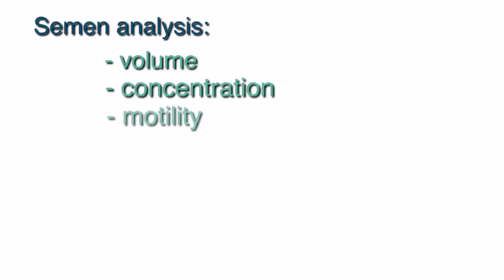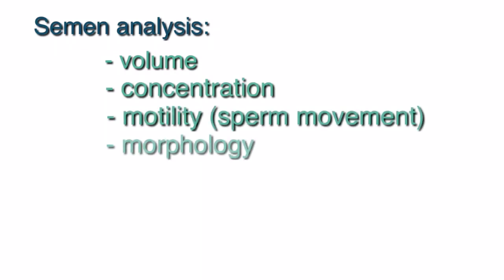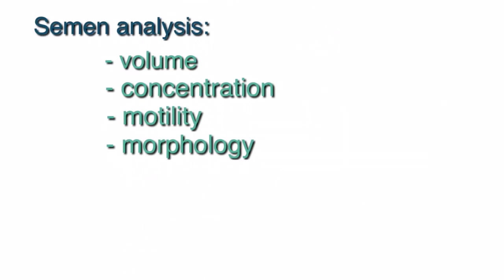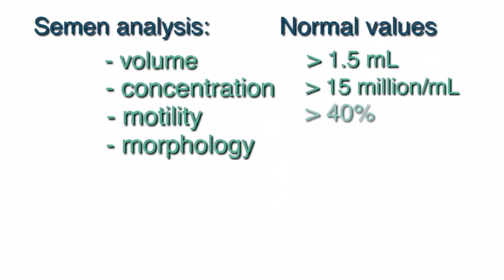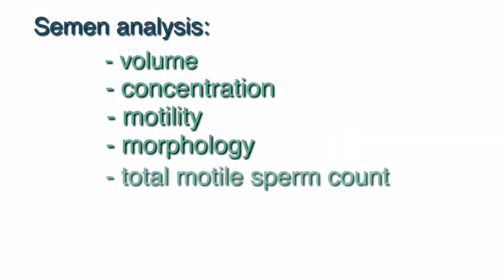There are four main parameters that we assess for in a semen analysis: volume, concentration, motility — or how well the sperm is moving — and morphology, the shape of the sperm. The current World Health Organization definitions of normal parameters are: volume greater than 1.5 milliliters, concentration greater than 15 million sperm per ml, motility greater than 40%, and morphology greater than 4%. The total motile sperm count is another parameter we evaluate.